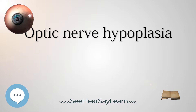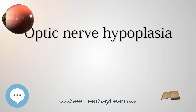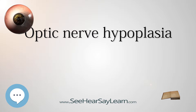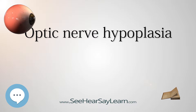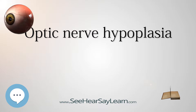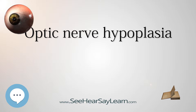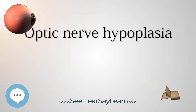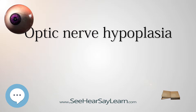Visual acuity can range from no light perception to near-normal vision. Children diagnosed with ONH generally present with vision problems including nystagmus — involuntary movement of the eyes, which tends to develop at one to three months — and/or strabismus, the inability to align both eyes simultaneously, manifested during the first year of life. The majority of children affected experience improvement in vision during the first few years of life, though the reason is unknown. There have been no reported cases of decline in vision due to ONH.